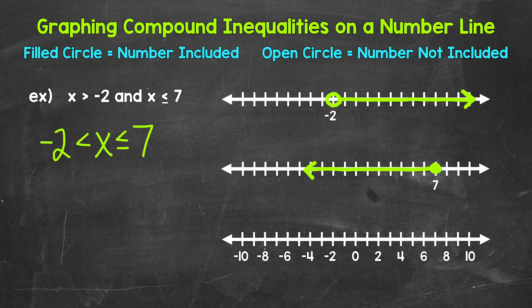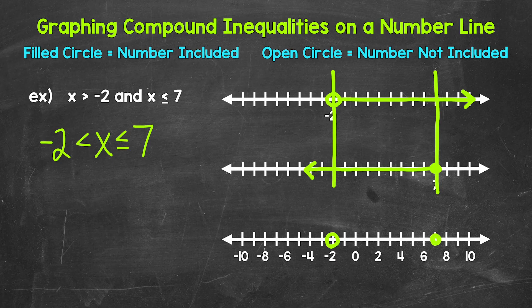Now since this is a compound inequality, we need to combine these. We need to see where they overlap. We want this section right here: an open circle at negative 2, a filled circle at 7, and then everything in between. So this is our graph of x is greater than negative 2 and less than or equal to 7 — that represents our compound inequality.